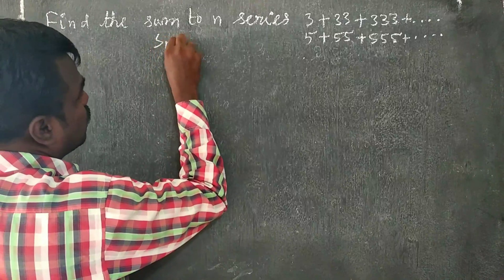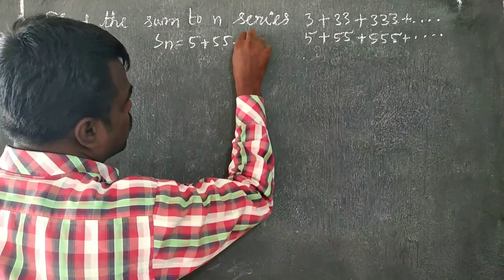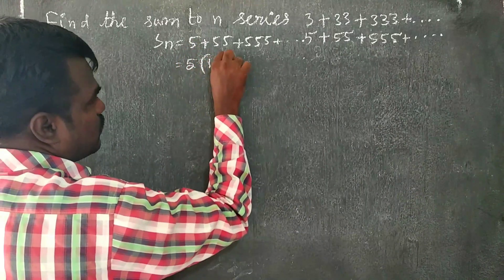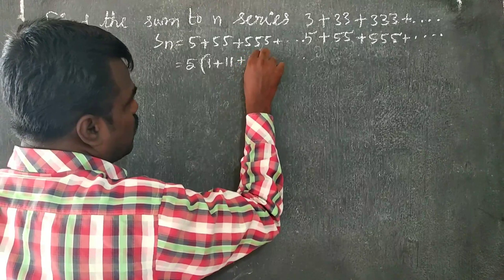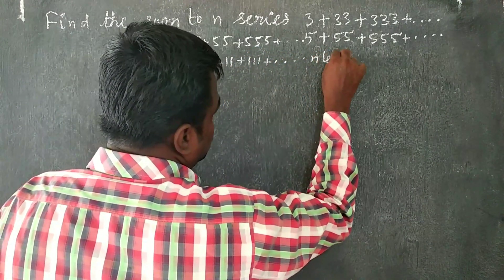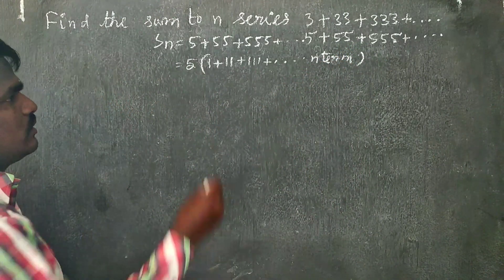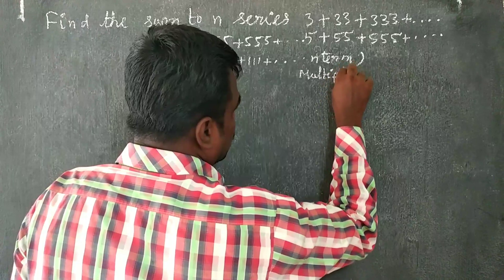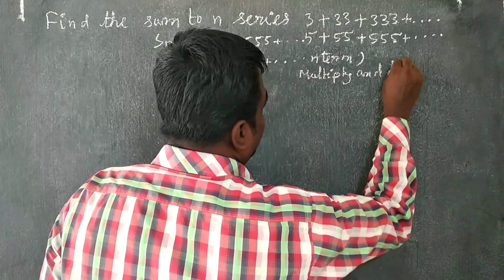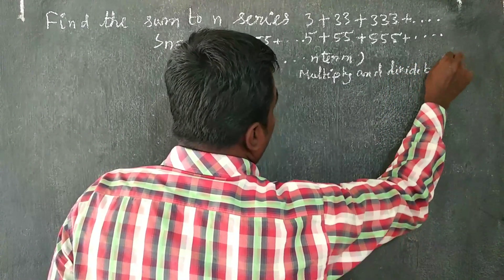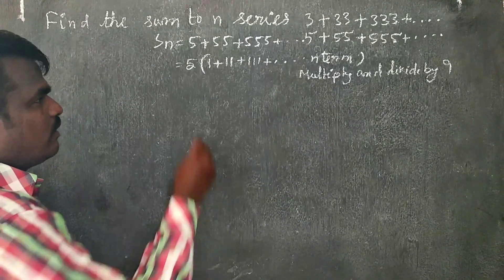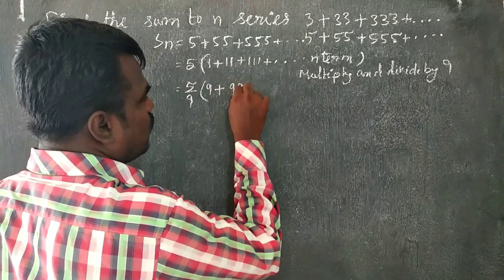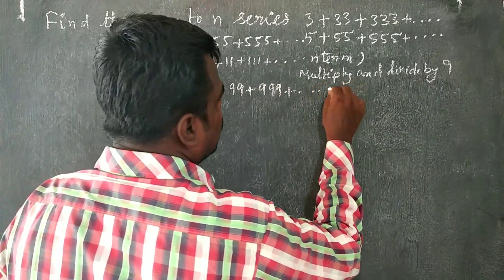Now the second sum, Sn equals 5 plus 55 plus 555 and so on. We can write 5 as 5 times 1, 55 as 5 times 11, and 555 as 5 times 111, and so on up to n terms. So Sn equals 5 times the sum of 1 plus 11 plus 111 up to n terms. Again, multiply and divide by 9.